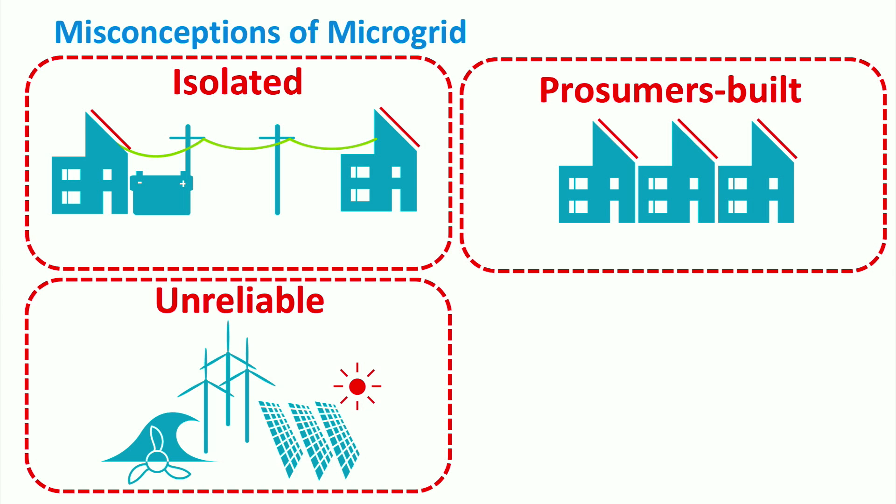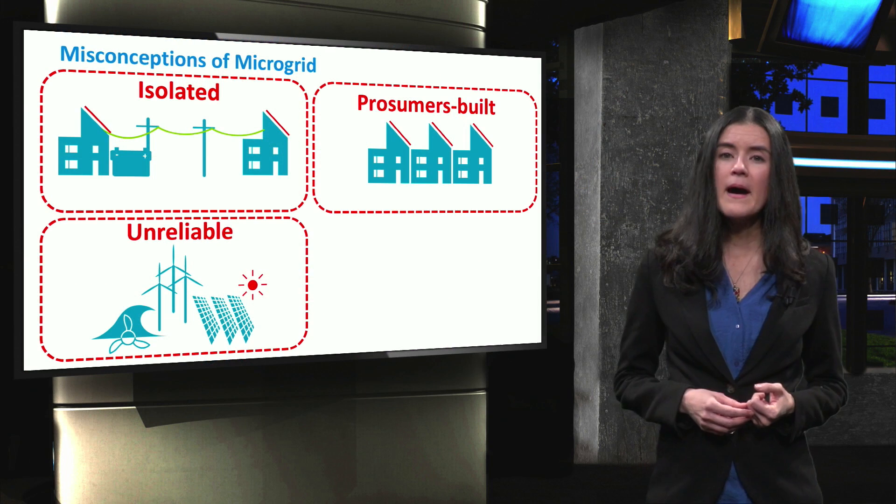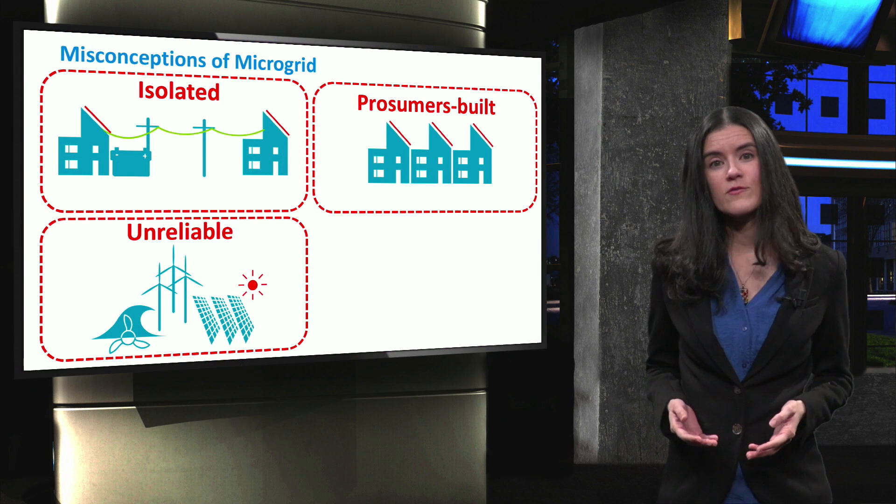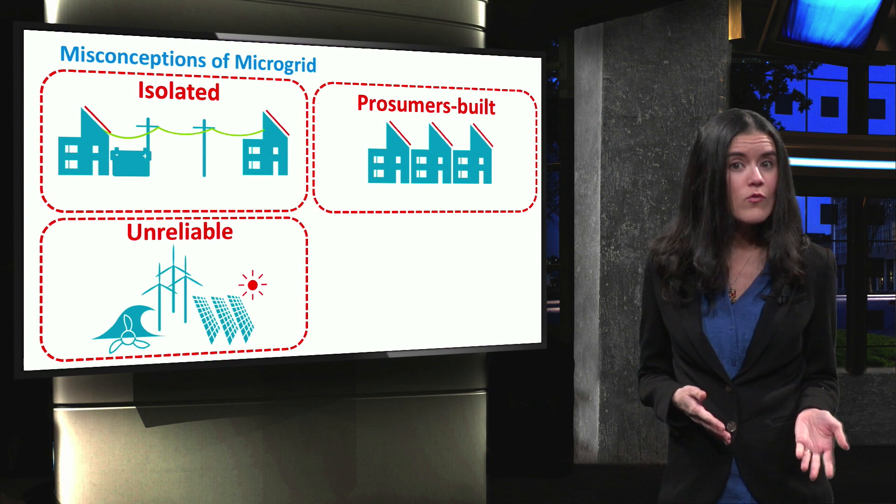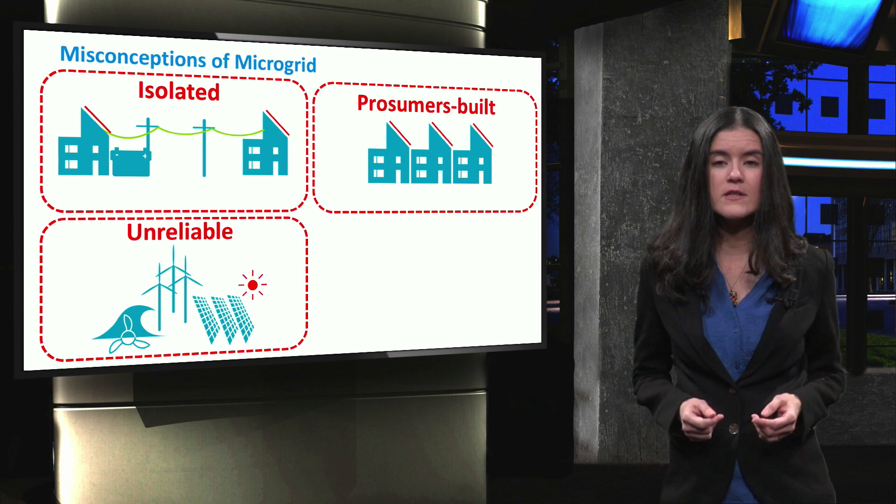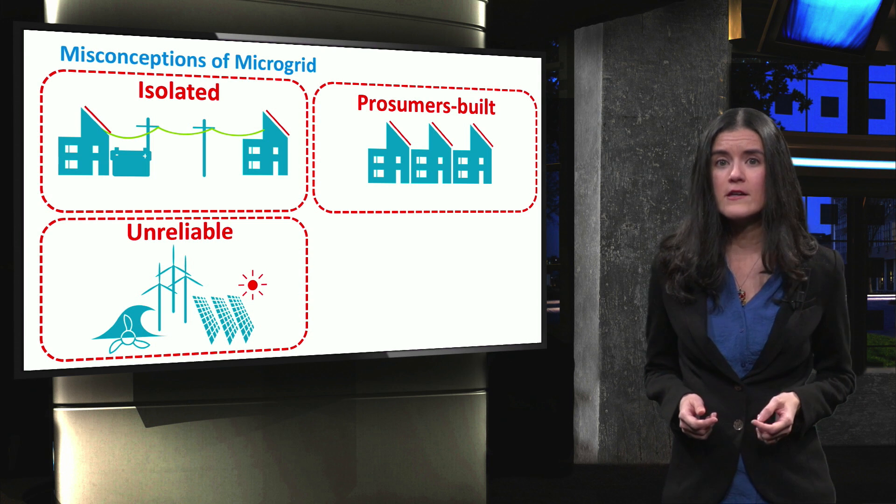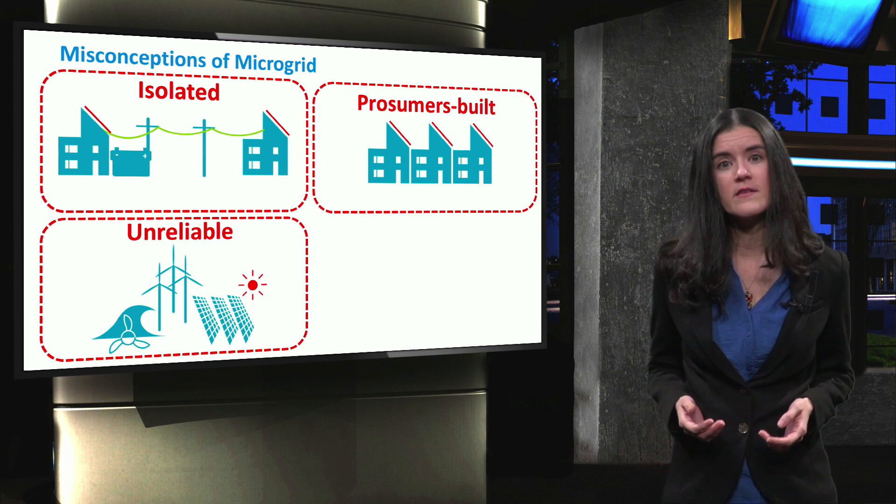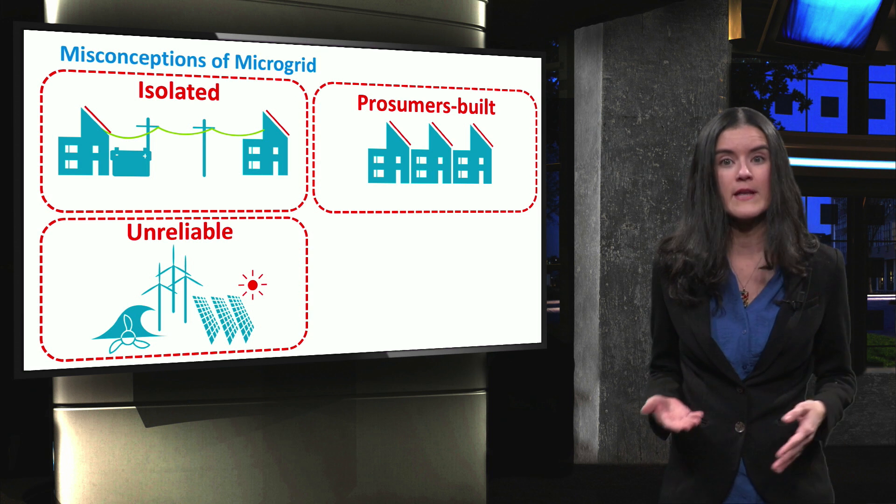Third, some people might think that microgrids are composed of only intermittent renewable energy sources, and that they are therefore unreliable and easily subject to failures and blackouts. However, microgrids are integration platforms, which allow the connection of not only renewable energy sources, but also traditional units. A good energy management system will prevent the microgrid from experiencing failures and blackouts.